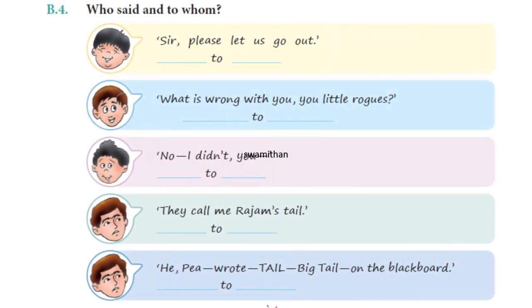Now B4 — 'Sir, let us go out.' It's an exercise about the beeper. Who said this? Yes, Somu said it. But to whom? The Tamil pundit.